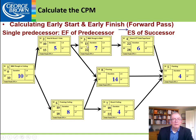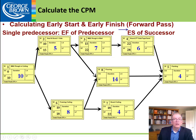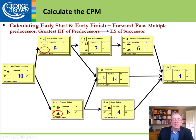Continuing the forward pass: the early finish becomes the early start; plus 7 gives us 22, plus 6 gives us 28. The 18 becomes the early start plus 4 equals 22. Where activities merge on the forward pass, do we take 15 or 18 as the early start? Since both predecessors must be done before flooring can start, we have to wait for 18 days — we take the larger number where successors merge. So 18 plus 14 gives us an early finish of 32.